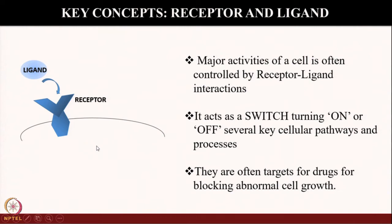Sometimes it is switched on, sometimes it is switched off. Why are we supposed to know about this? Because these are often targets for drugs and abnormal cell growth. Ligand-receptor interactions are very attractive targets for drugs, for sometimes blocking abnormal cell growth, cell proliferation, cancer, and so on.